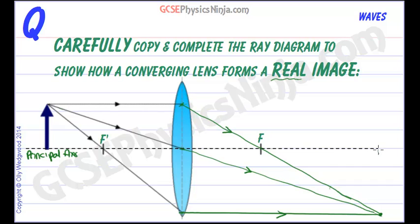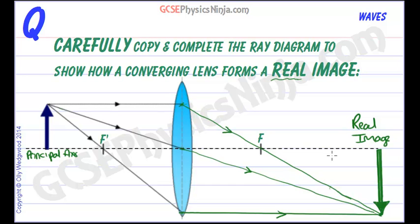This will be a real image because these rays are coming together. Just notice that this image is actually larger than the starting object. So this is a real image and it's worth noting that it's magnified. And it's upside down - it's inverted. So if you're asked to describe the image, you would say it's real, magnified, and inverted.